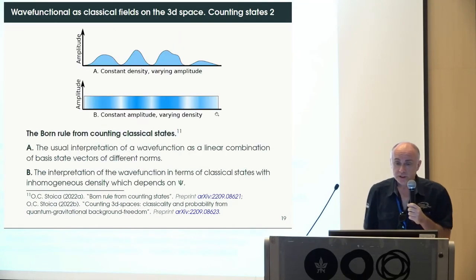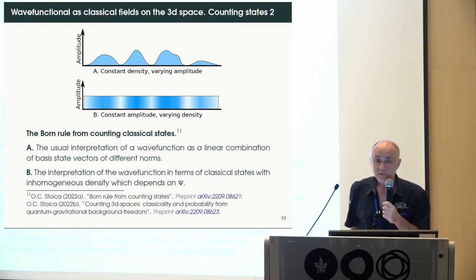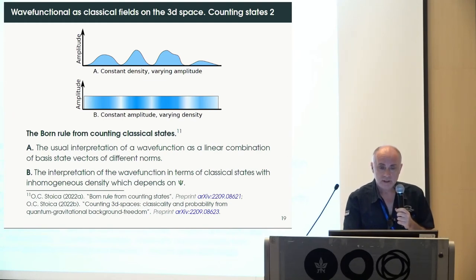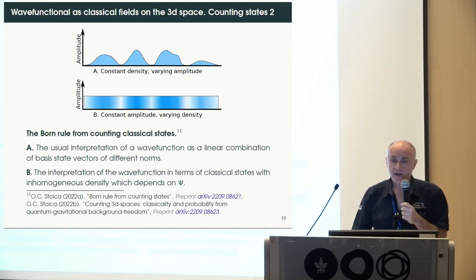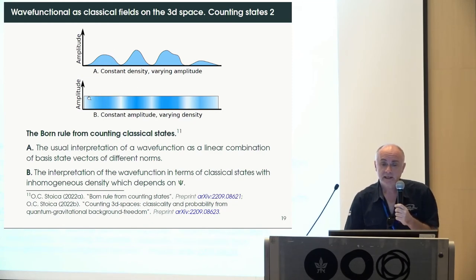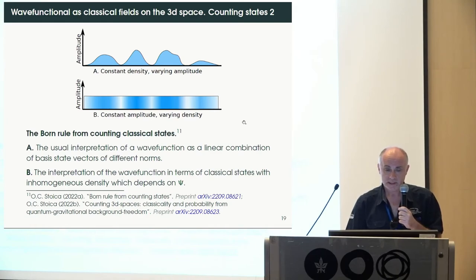To explain the difference from the usual representation: normally the configuration space is on the horizontal axis and the amplitude varies. Here I take constant amplitude and change the measure — I change the density on the configuration space.